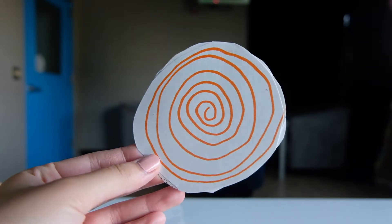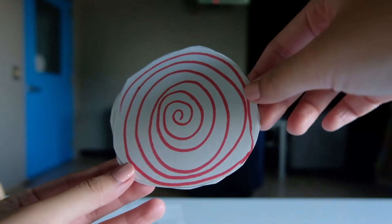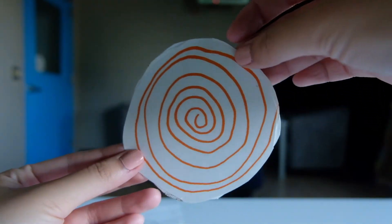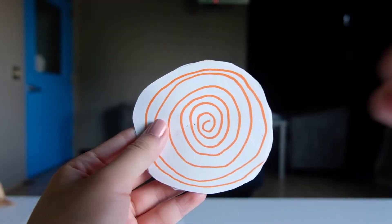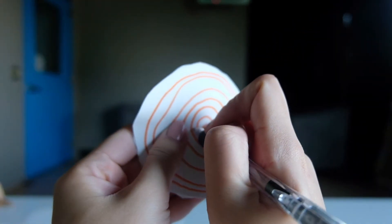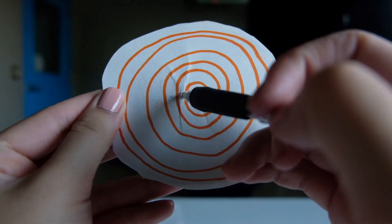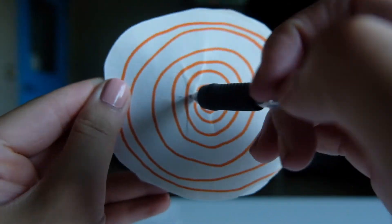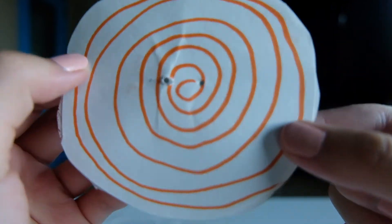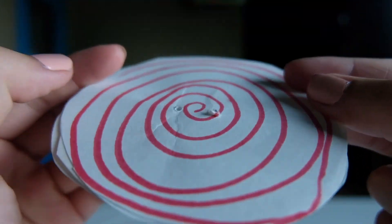Don't forget to decorate the other side of the circle too. Here, I used red marker on the other side. Now we have to poke two holes in the center of our circle. Here, I am using a black pen and I'm pushing hard until two holes pop up just like this.